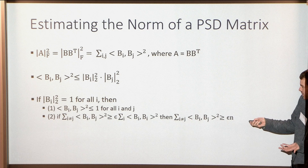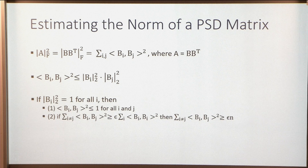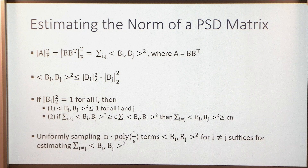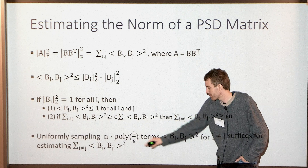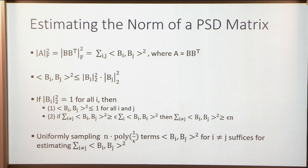We're in a situation with many small terms — each inner product ⟨B_i, B_j⟩² is at most 1, but they sum to something large like ε·N. When you have many small things summing to something large, you uniformly sample. Sampling roughly N · poly(1/ε) off-diagonal terms, averaging, and scaling by the reciprocal sampling probability gives a good estimate for the sum of squares of off-diagonal terms — reading only order N entries total.